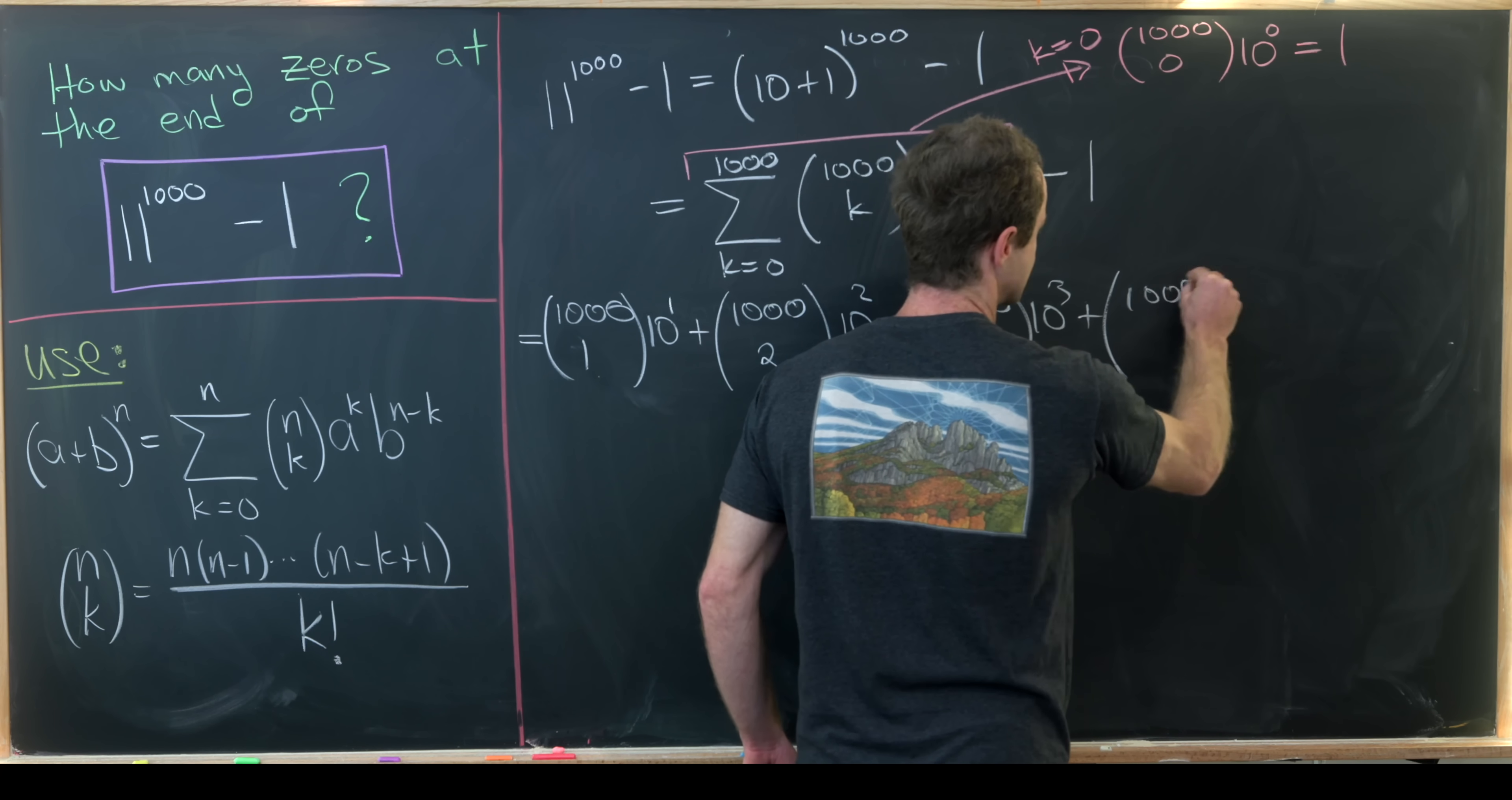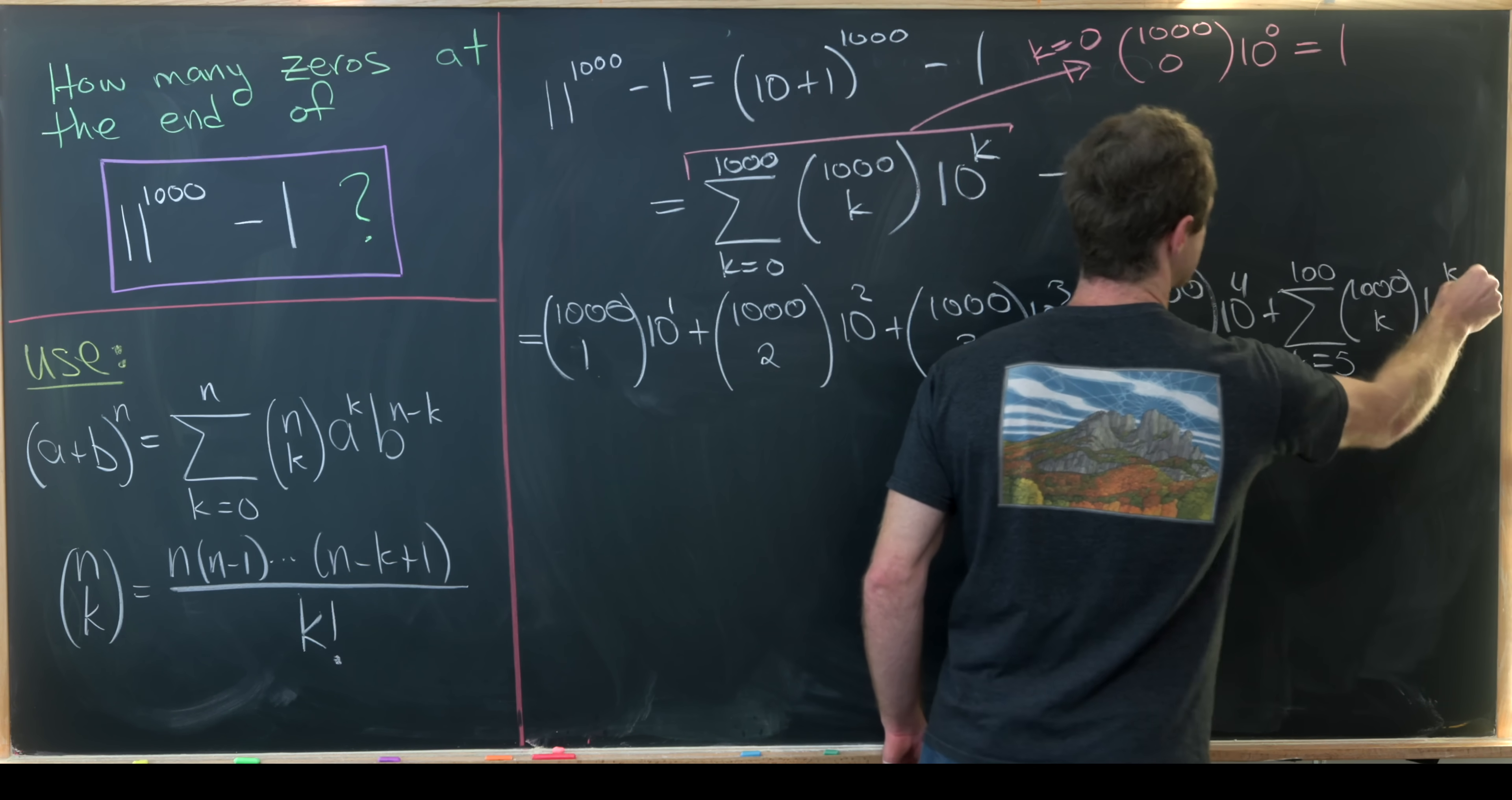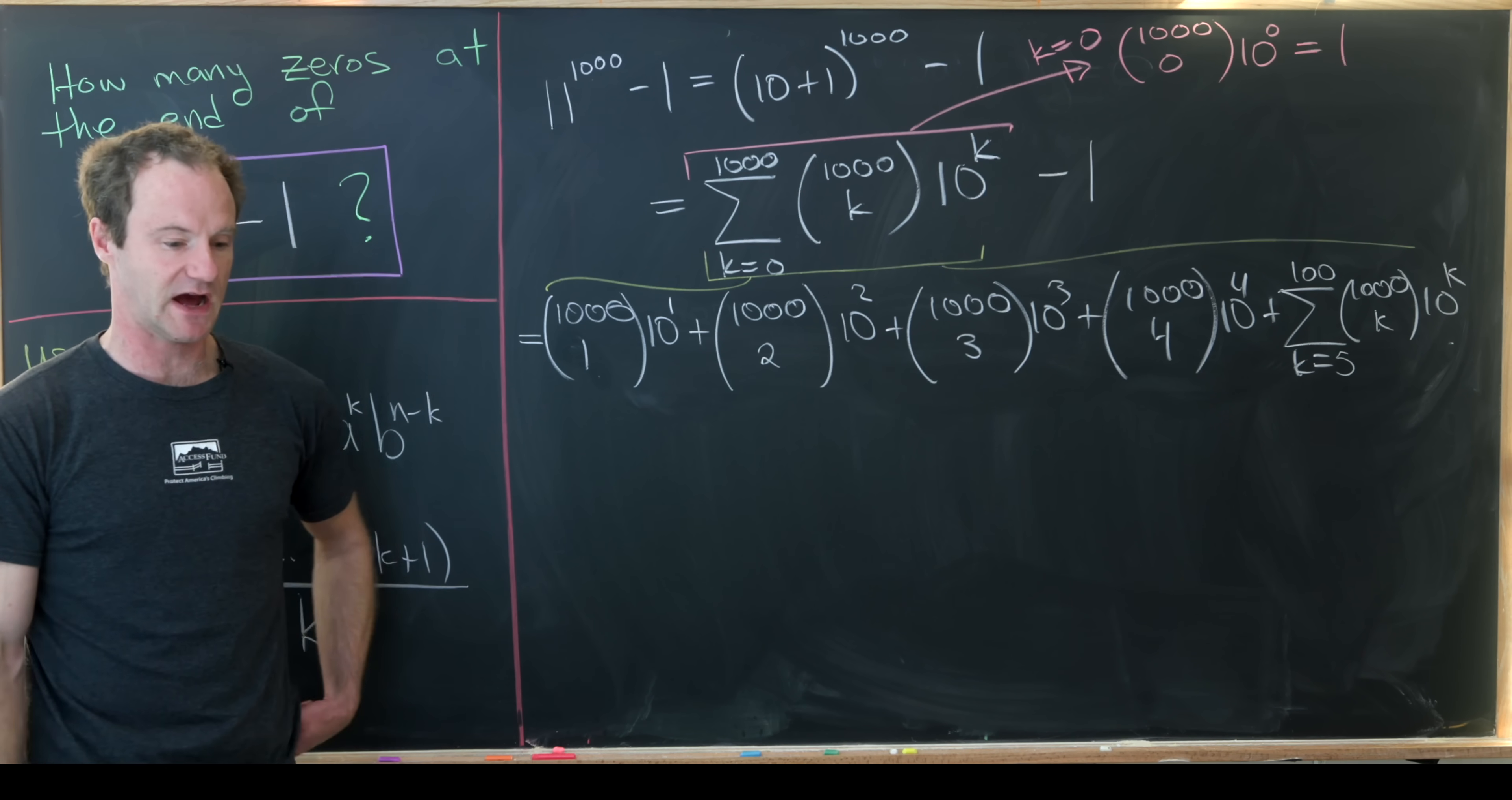Finally 1,000 choose 4 times 10 to the 4 and then we'll have plus the sum as k goes from 5 up to 1,000 of 1,000 choose k times 10 to the k. So I didn't do anything super fancy here. All I did was take this sum right here and spread it into these terms keeping in mind that I canceled the first term out.